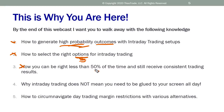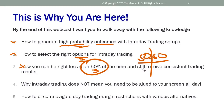Number three: how you can be right less than 50% of the time and still receive consistent trading results. This is going to be one of the mantras of this evening's presentation — the 50-50 setup. If you set up the trade correctly, the trade itself will actually help you in terms of profitability. Number four: why intraday trading does not mean you need to be glued to your screen all day. I'm going to show you very hands-off intraday strategies.